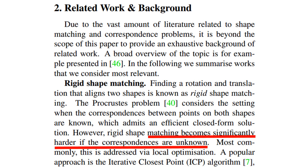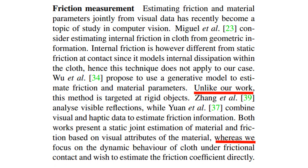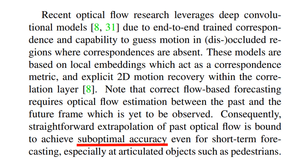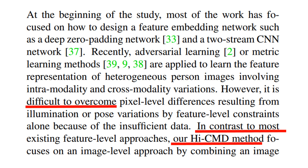It says matching becomes significantly harder. This is another example — it describes the differences between existing methods and the proposed method. It says unlike our method and whereas we focus on. This is another example: one existing method requires a good initial alignment; then the paper says in our work, we leverage, to indicate the difference. In this example, the authors say existing methods will achieve suboptimal accuracy. This example says it is difficult for existing methods to overcome the pixel-level differences; then the paper says in contrast to most existing feature-level approaches, our method focuses on.